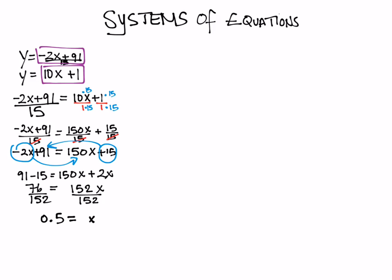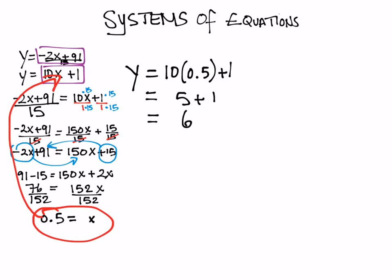To find the value of y what I do is I take 0.5 and I plug it into one of the two equations above. Both equations will give me the same value for y when x is 0.5 so it doesn't matter which one you choose. I'm going to choose the bottom one. Therefore y equals 10x plus 1 but x is actually 0.5 so I have 10 times 0.5 plus 1. 10 times 0.5 is 5 plus 1 is 6 so y is 6. The answer is x equals 0.5 and y equals 6.